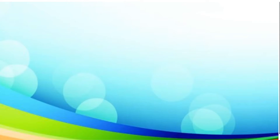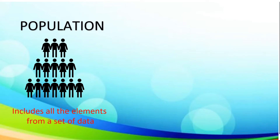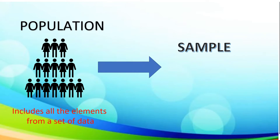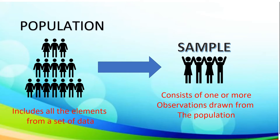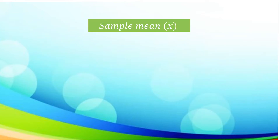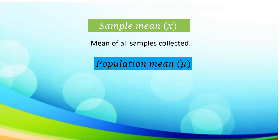For us to understand our given topic, let us start with the definition of a population. Population includes all the elements from a set of data. The given sample consists of one or more observations drawn from the population. The next term is sample mean, or in symbol x̄, which refers to the mean of all samples collected. Population mean, with the symbol mu, refers to the mean of all values in the population.